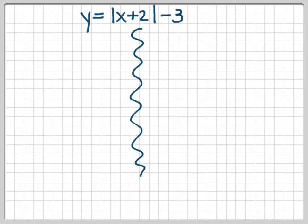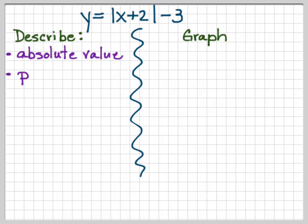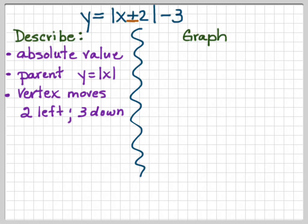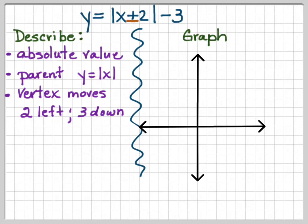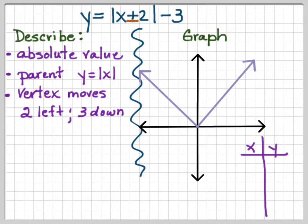We're going to do it with an equality and not an inequality first. So if I had to describe this and then graph it, I would say that it is an absolute value. Its parent is y equals the absolute value of x. The vertex moved 2 left and 3 down, and that's it — there's nothing else to describe. This is what the parent function looks like, our vanilla function, and let's see how the new function looks on top of it.